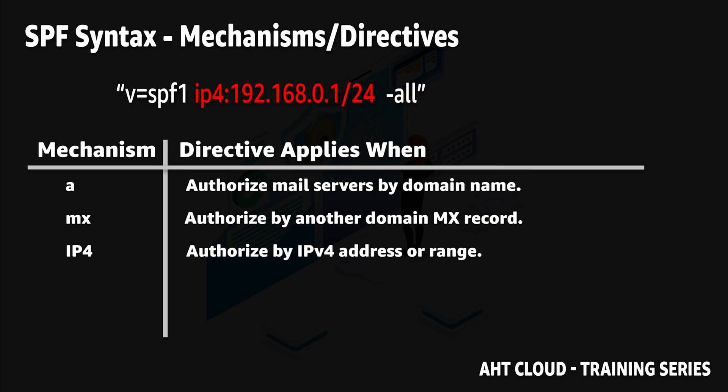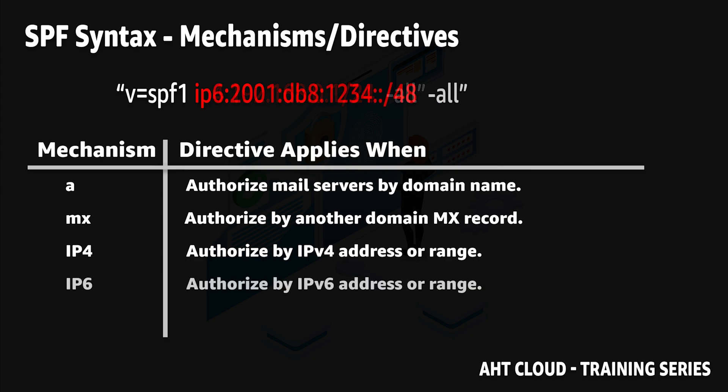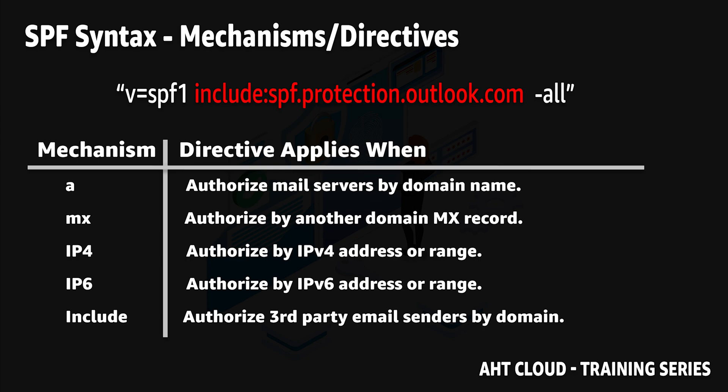The third way to authorize is by IPv4 address or IPv4 range. You write ip4: followed by the IPv4 address or range you want to authorize. The fourth way is to authorize servers by IPv6 addresses or a range — similarly, you write ip6: followed by the IPv6 address or range.